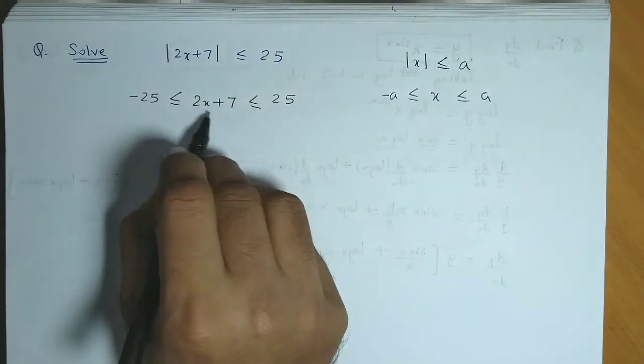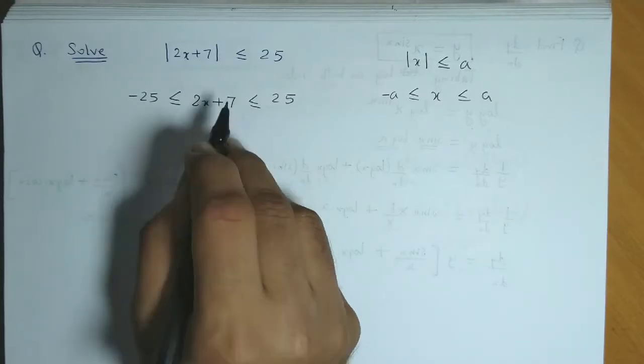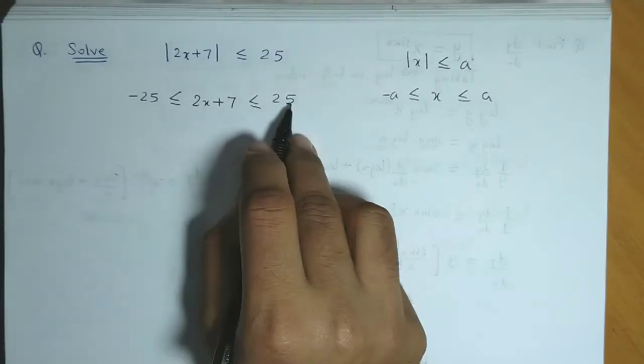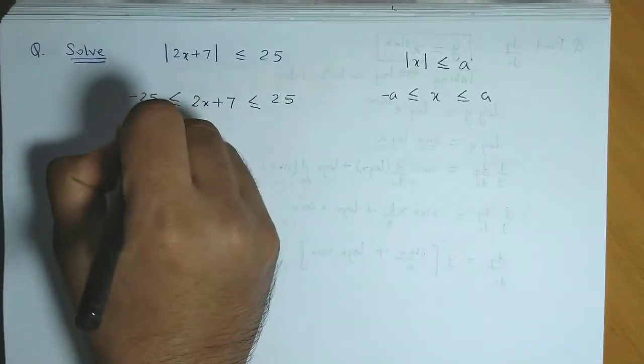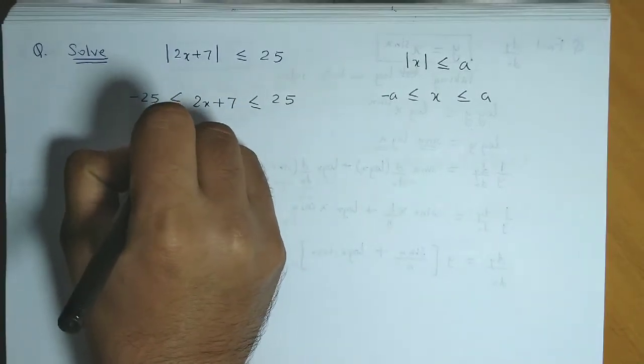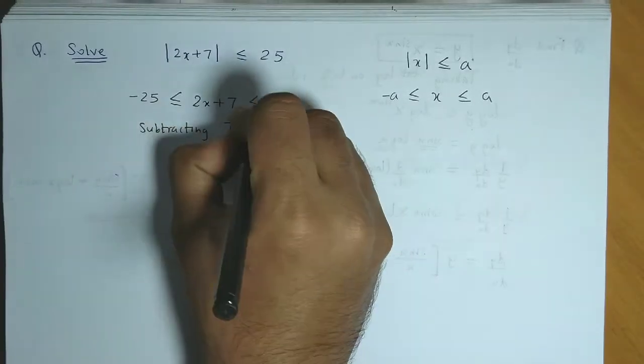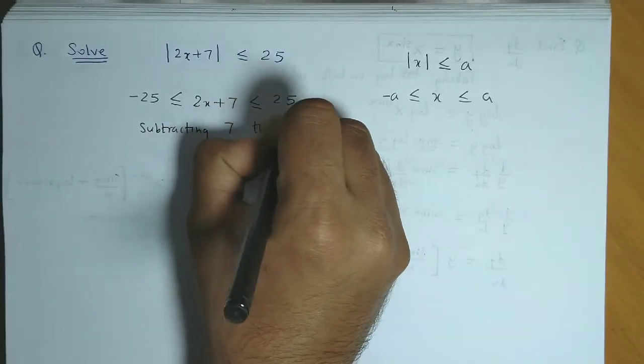So we need to obtain the x term in the middle. To eliminate plus 7, we need to subtract 7 throughout. So the next step would be subtracting 7 throughout.